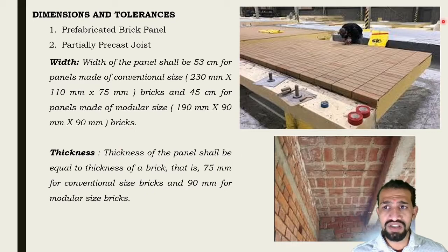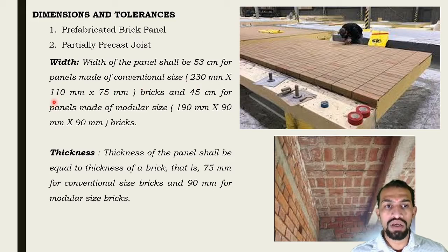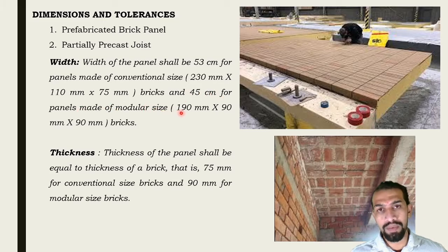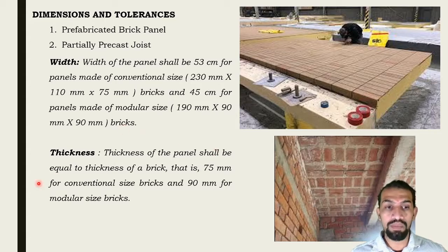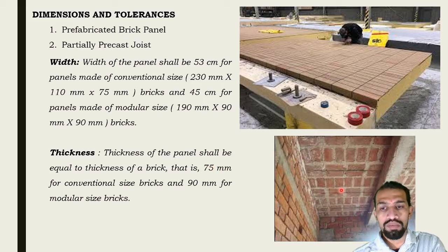For the width of the prefabricated panel, the width shall be 53 cm for panels made up of conventional size bricks of 230 mm × 110 mm × 75 mm, and 45 cm for panels made of modular size bricks of 190 mm × 90 mm × 90 mm. Thickness of the panel is 75 mm for conventional size bricks and 90 mm for modular size bricks.